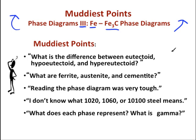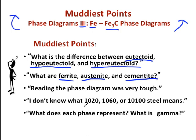In this screencast, we will attempt to answer the following muddiest points taken directly from students: What is the difference between eutectoid, hypo-eutectoid, and hyper-eutectoid? What are ferrite, austenite, and cementite? Reading the phase diagram was very tough, so I will explain the different reactions and how to read it. I don't know what 1020, 1060, or 10100 steel means, and what does each phase represent — for example, what is gamma? There are a lot of annotations available. Let's get started.